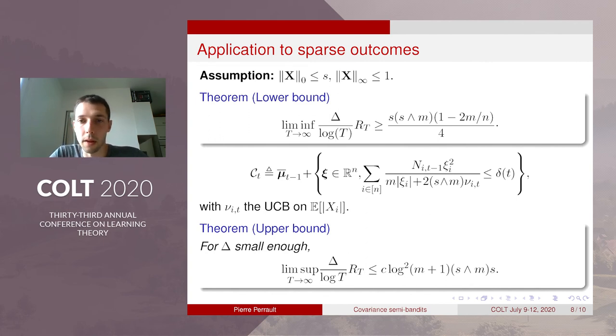So we also provide an application to sparse outcomes. So here we assume that the outcomes are sparse. So for example it can represent a payment vector of a user that just wants to buy s items. And we also assume bounded outcomes.